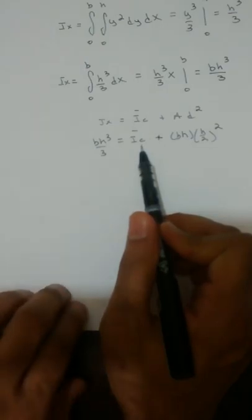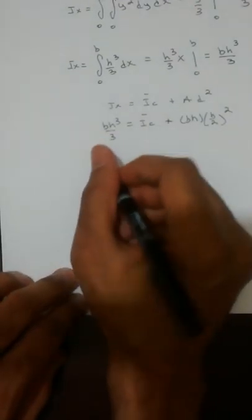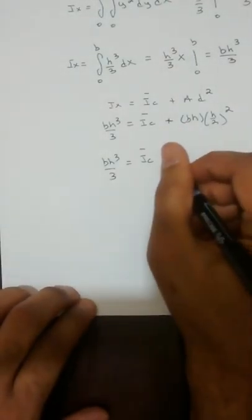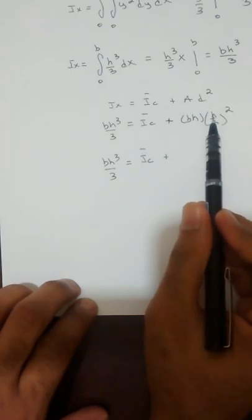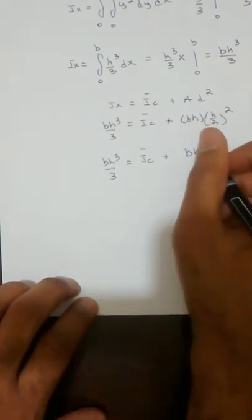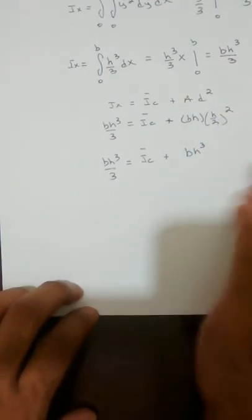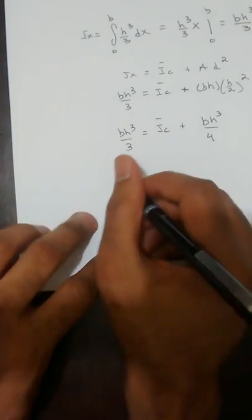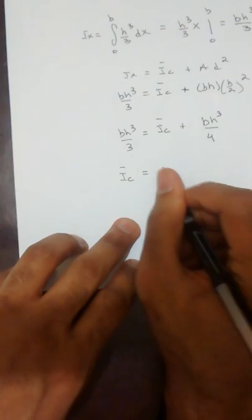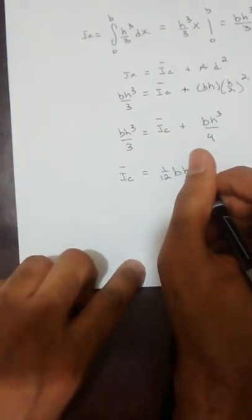All we have to do is solve for the unknown I sub c. Doing some algebra: b h cubed over 3 equals I sub c plus b times h times (h/2) squared. The b times h times h squared gives b h cubed, and the 2 squared in the denominator gives 4. Solving this algebraic equation for I sub c, we get the centroidal area moment of inertia of a rectangle: I sub c equals (1/12) b h cubed.